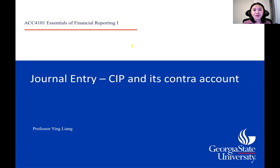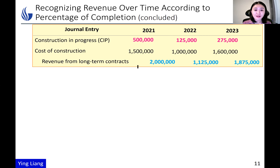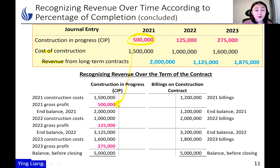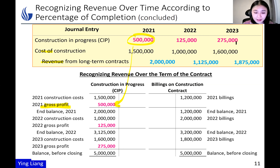Welcome back. In this video I want to talk about the two new accounts we just learned: CIP (Construction in Progress) and its contra account, Billings on Construction Contract. We use the journal entry to recognize revenue and cost, and put the difference into the CIP account. CIP stores not only the cost but also the gross profit — when revenue is greater than cost — on the left-hand (debit) side.